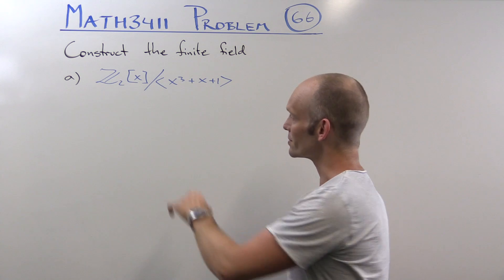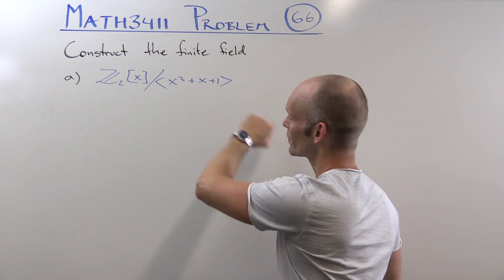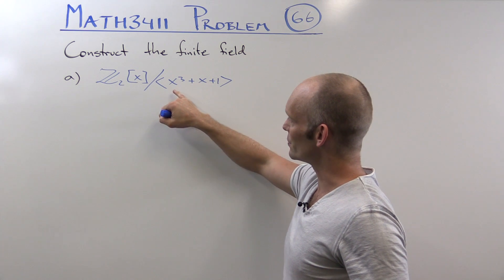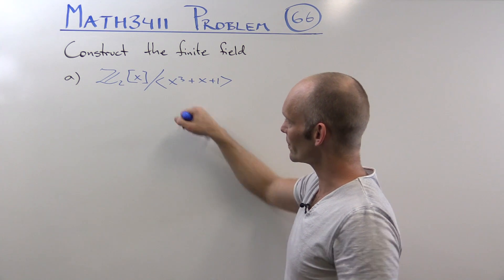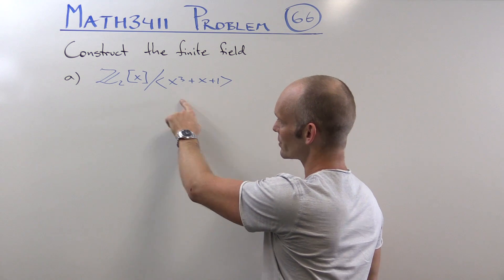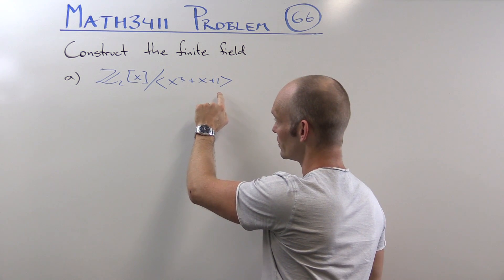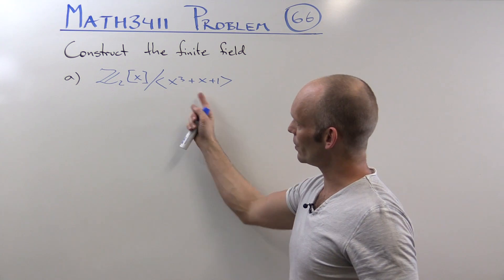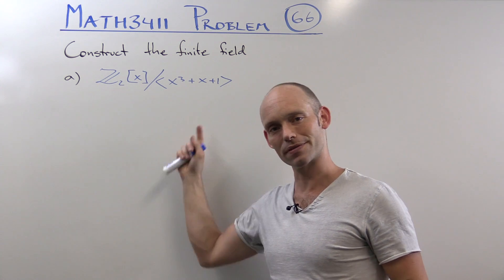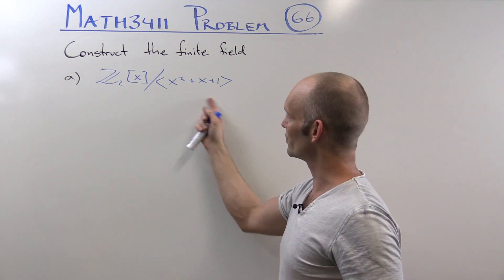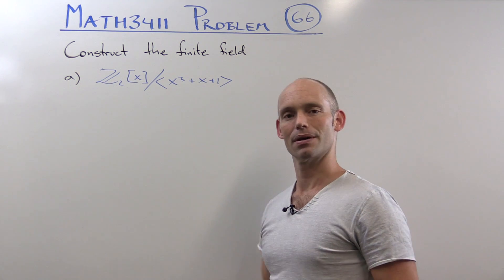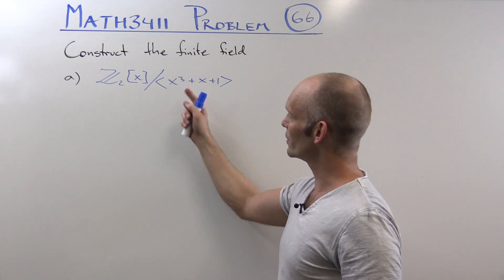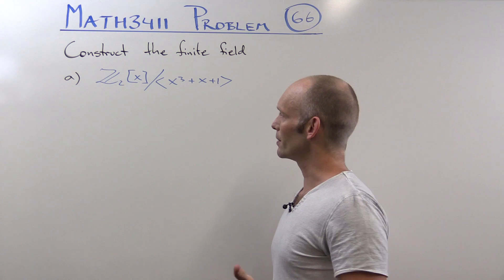The reason it forms a field is that this polynomial is irreducible. We can quickly see that by testing 0 and 1 — evaluating this polynomial gives us 1 and 1 in either case. So neither 0 nor 1 is a root of this polynomial, meaning it doesn't have any binary roots and therefore no binary linear factors. Because the degree of this polynomial is 3, it must be irreducible.